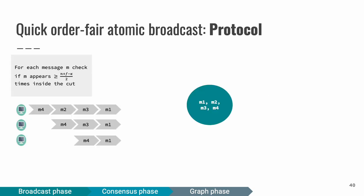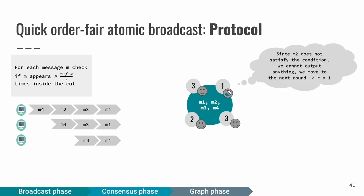The next step is to check for each message inside the vertex if it appears more or equal than (n+f-kappa)/2 times inside the cut. In this example, we see that messages M1 and M4 appears three times in the cut, message 3 appears two times in the cut, and message 2 appears only once in the cut. In the upper left corner, we can see that the condition for the OF delivering a message is that all messages satisfy the condition that they appear in more than two messages logs. Since M2 does not satisfy the condition, we cannot output anything. We have to move to the next round of the protocol.